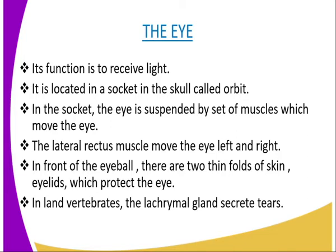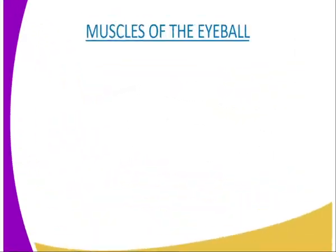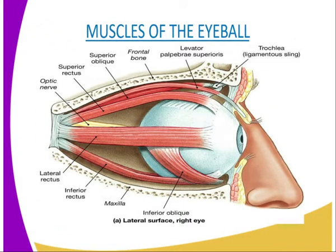Now we are going to look at the eye, which is part of the sense organs. The eye is a complex sense organ whose function is to receive light by which an animal perceives and distinguishes objects in its immediate environment. We can have a diagrammatic presentation of the muscles of the eyeball as I explain them.